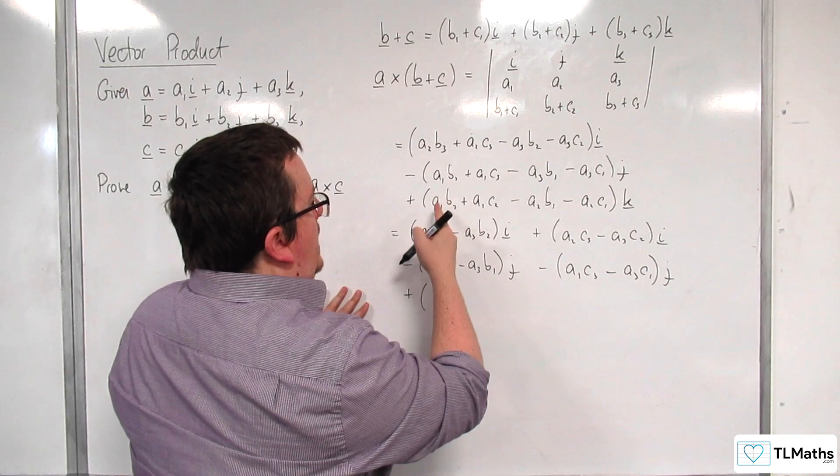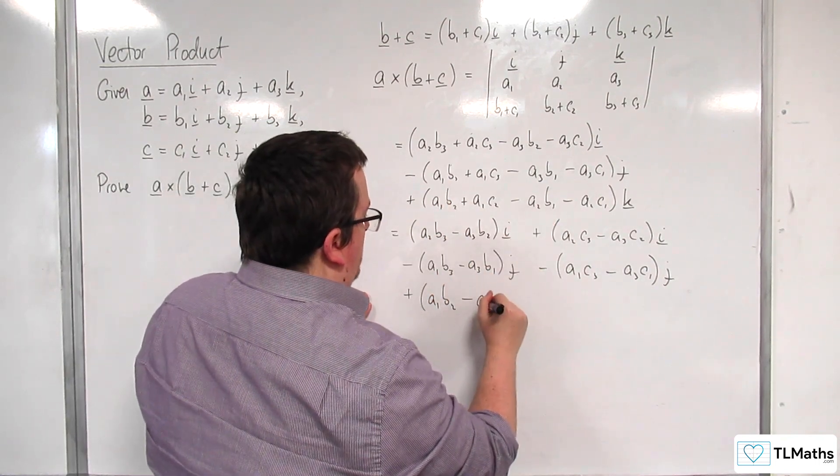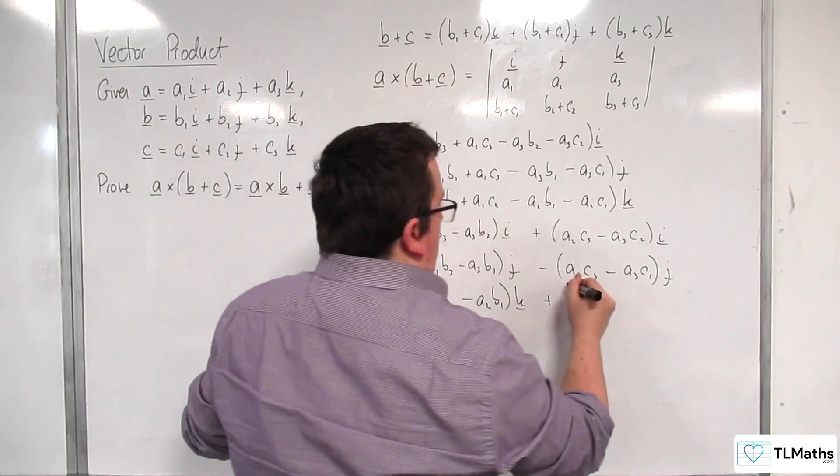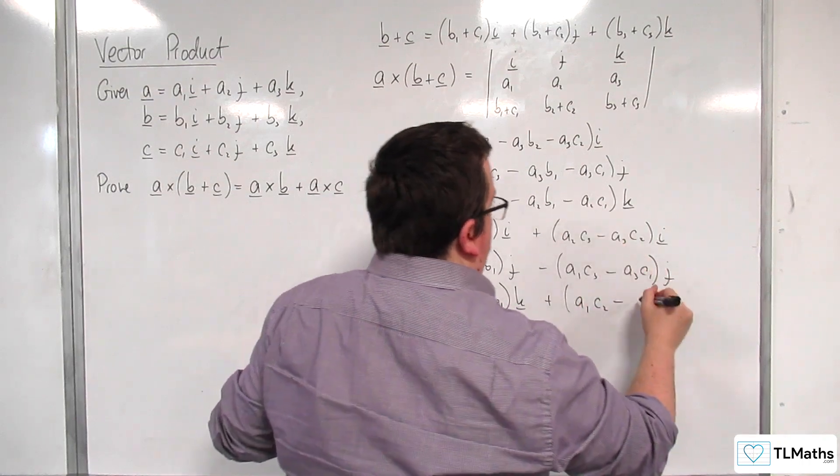Then I've got plus a1b2 take away a2b1 k, and I've got a1c2 take away a2c1 k.